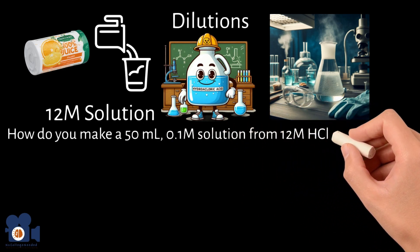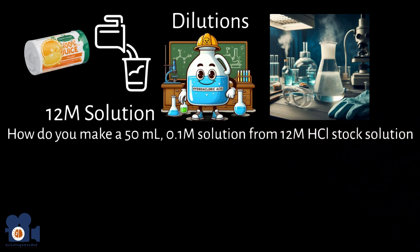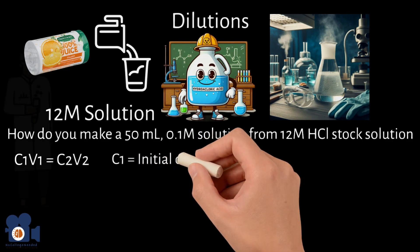How do you make a 0.1 molar solution from a 12 molar HCl stock solution? To start, you use the formula C1V1 equals C2V2, where C1 is the initial concentration.